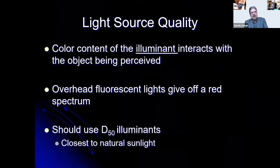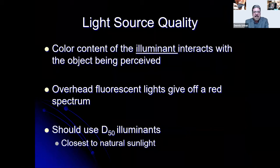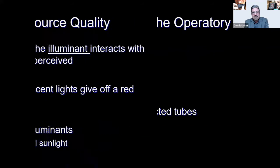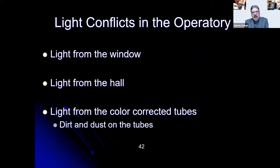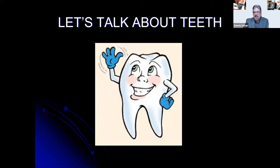Light source quality refers to the color content of the illuminant interacting with the tooth being perceived. Overhead fluorescent lights give off a reddish spectrum — they're not ideal for shade taking. You can use D50 illuminance or something closest to natural sunlight. Light conflicts in the operatory include light from windows, hallways, color-corrected tubes, and even dirt and dust on the tubes.